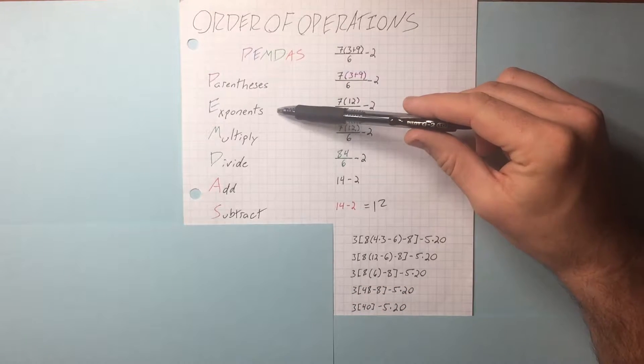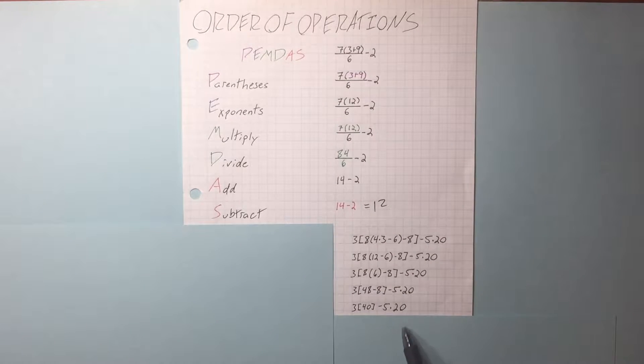Now we're done, so no exponents. Now we do our multiplication - we have two of them. We do our subtraction, and our answer is 20.